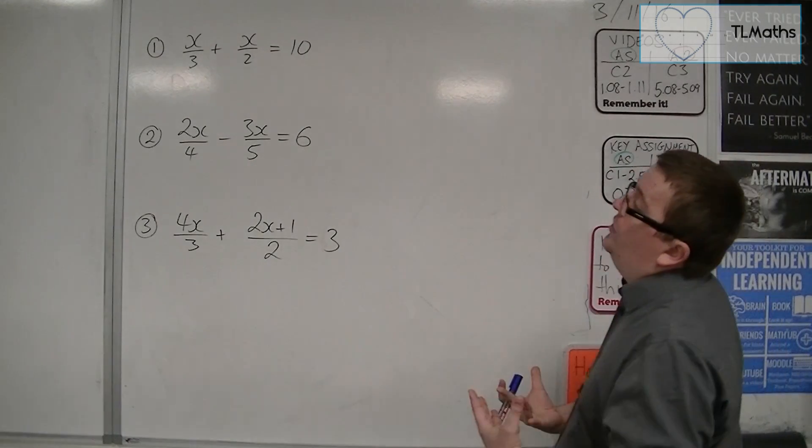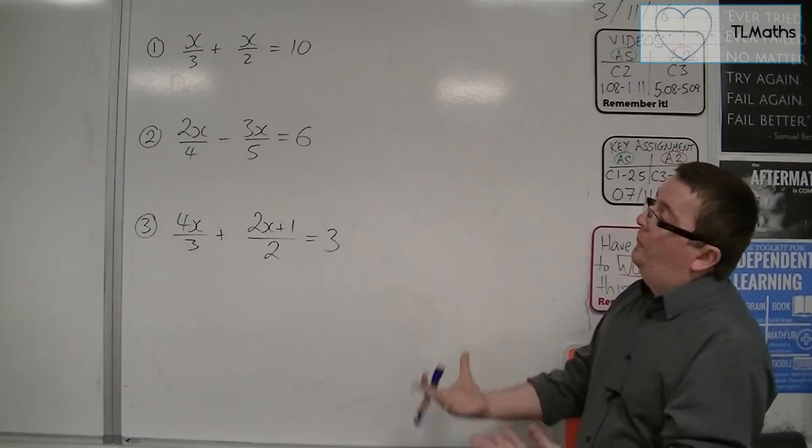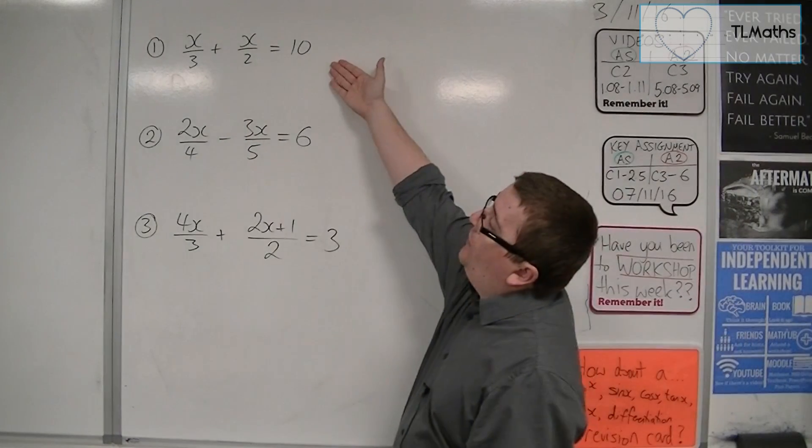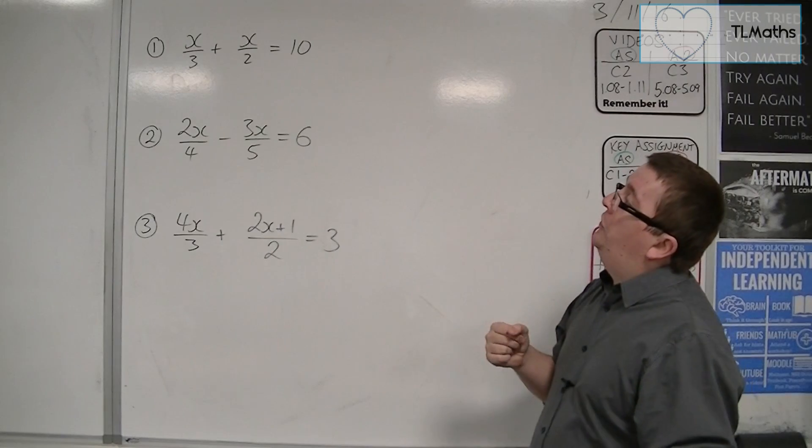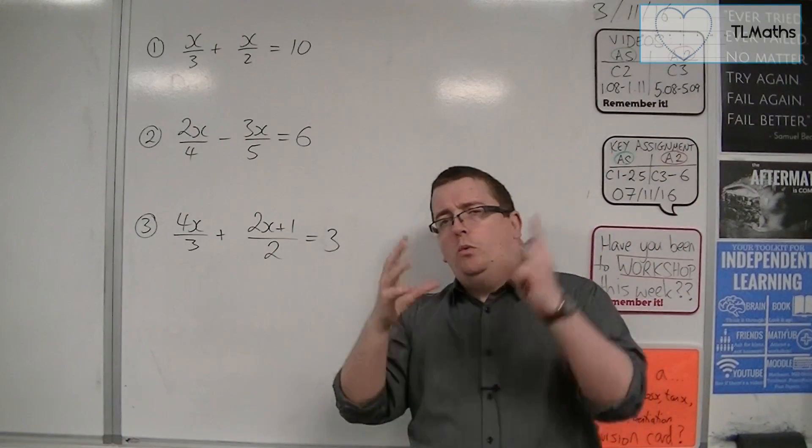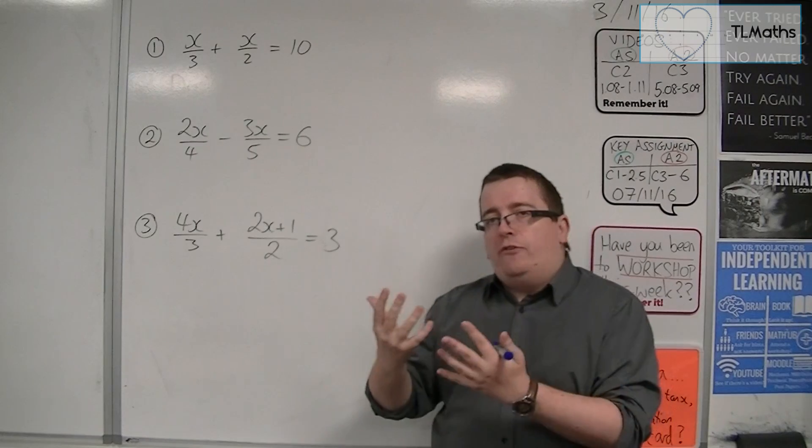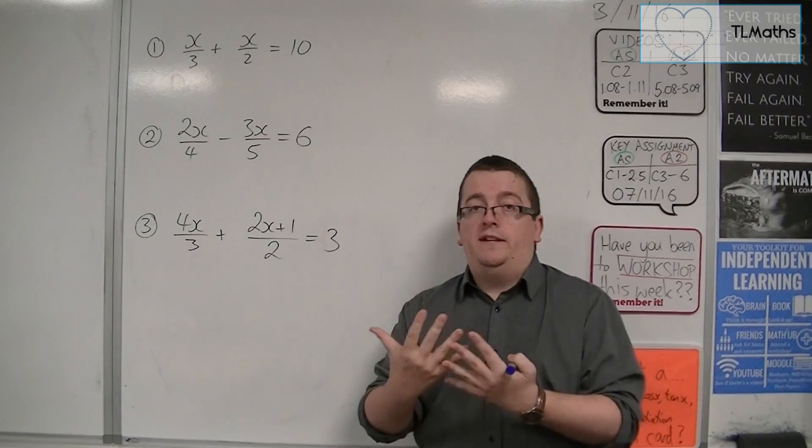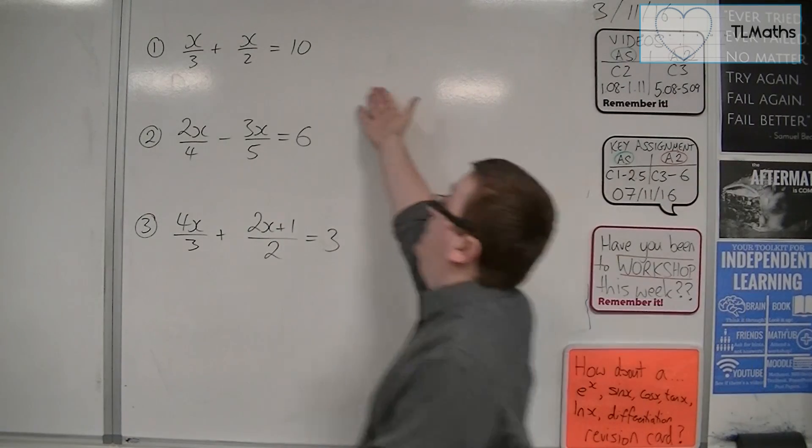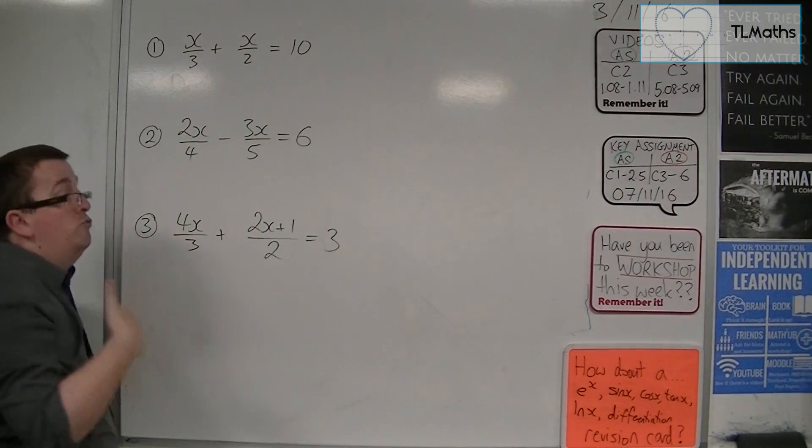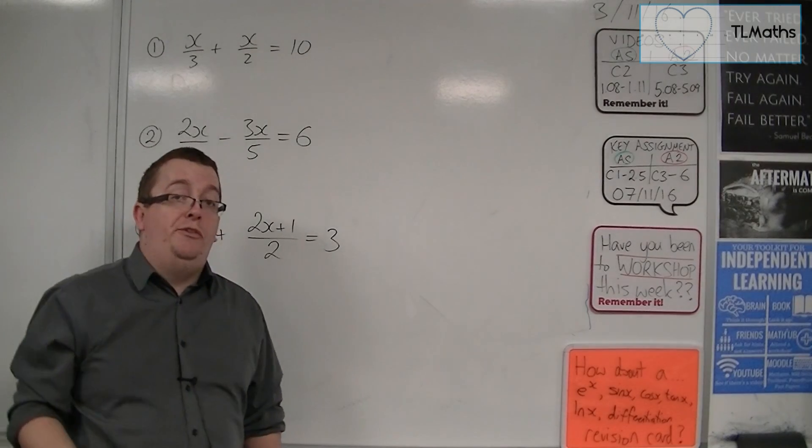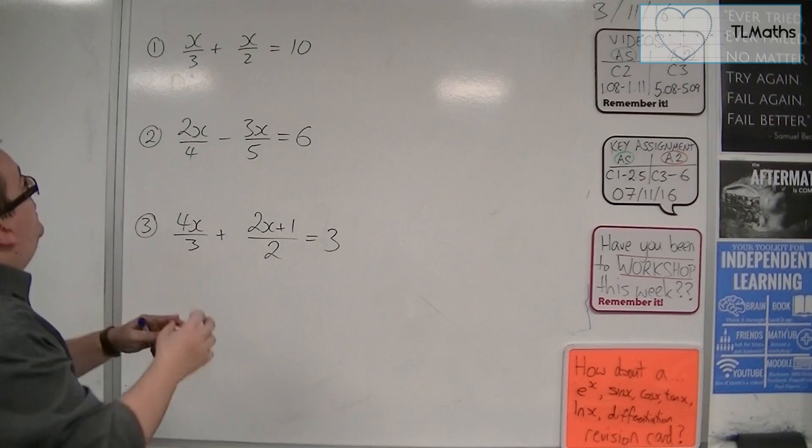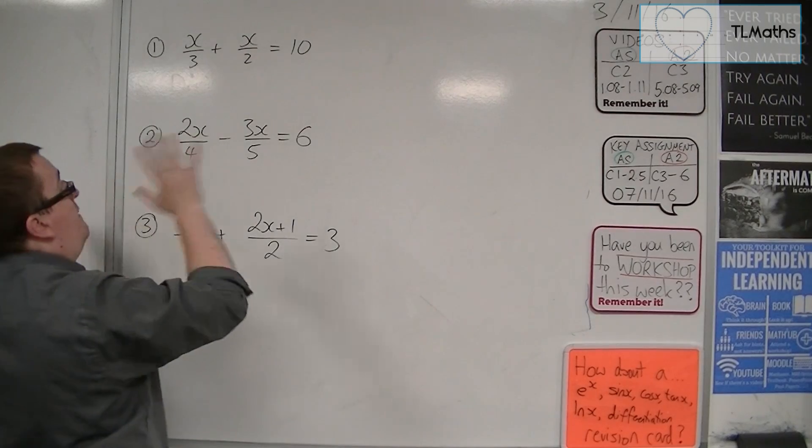So I want to show you one way of solving each of these. If we have a look at the first one, x over 3 plus x over 2 is equal to 10. What you want to do is get rid of the fractions. And to get rid of fractions, you can multiply everything by the denominator. Now we have two denominators here, the 3 and the 2. So it's really your choice about which one you start with. Let's say we started with the 3. That means to get rid of it, I've got to multiply everything by 3.